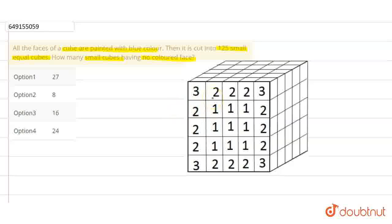When we arrange these 125 cubes, they form a cube. The number 3 means that 3 surfaces are colored. The number 2 means that 2 surfaces are colored. Where there is 1, it means that 1 surface is colored.